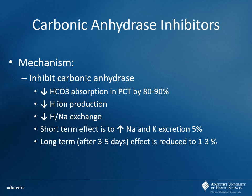Carbonic anhydrase inhibitors are very weak as diuretics because they act in the proximal convoluted tubule, and the kidney has the rest of the tubule — the loop, the distal convoluted tubule, and the collecting duct — to compensate for that effect. They're not commonly used as first-line diuretics, but there are some unique indications we'll discuss.